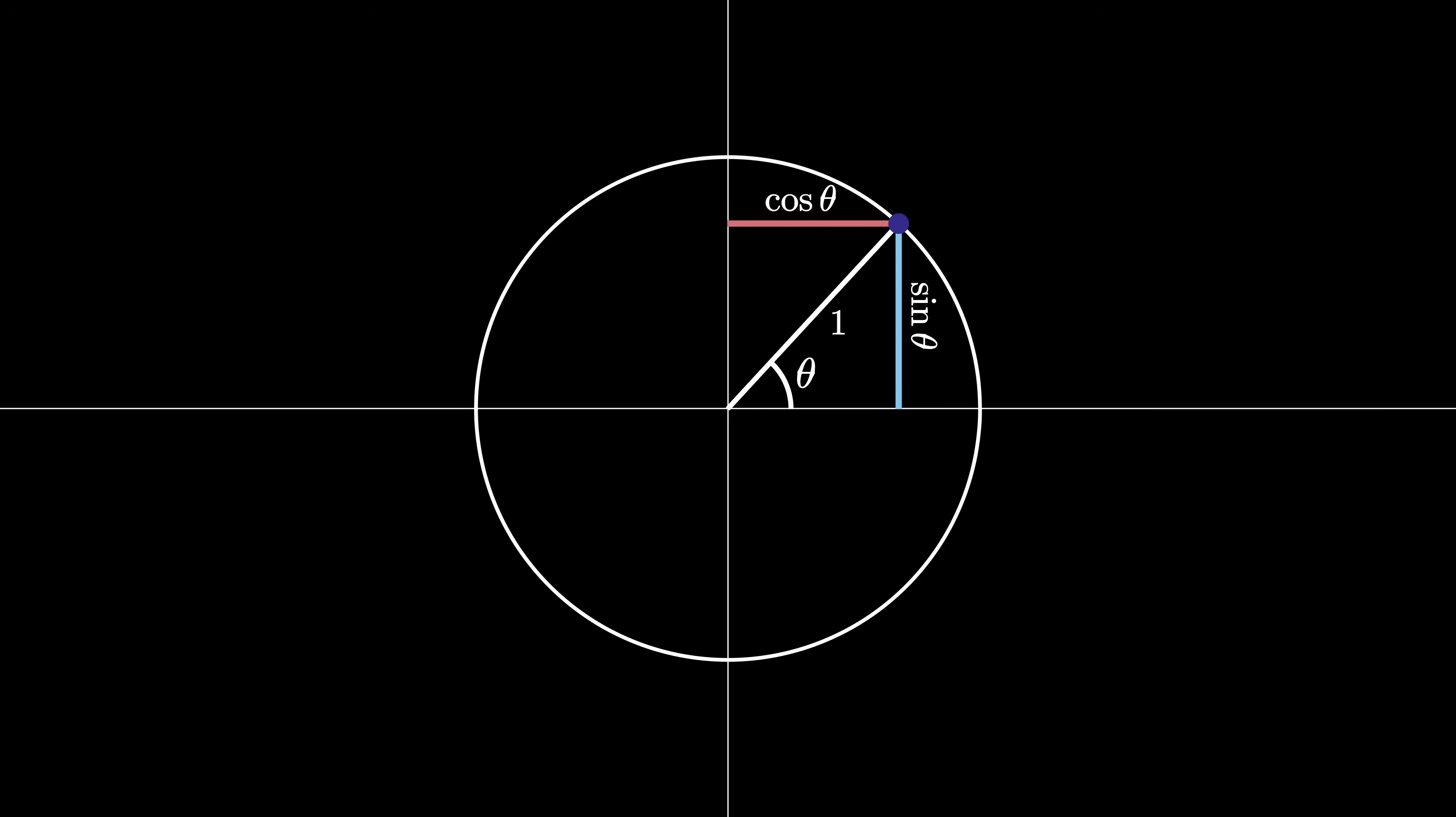Notice that the complementary angle in the first quadrant to theta is pi over 2 minus theta, so the cosine of theta is really the sine of the complementary angle. That means that the cosine of theta is equal to the sine of pi over 2 minus theta.